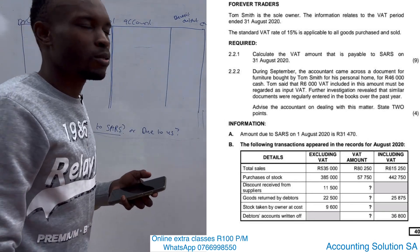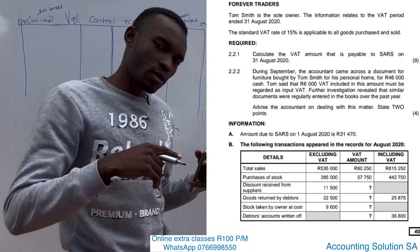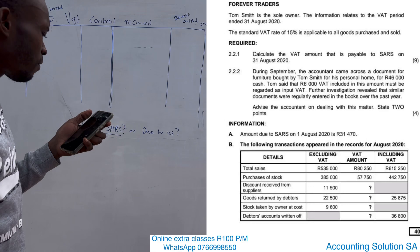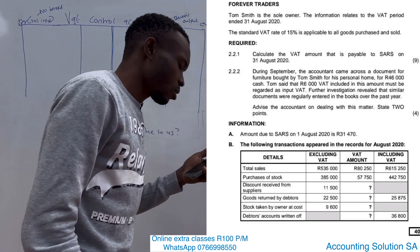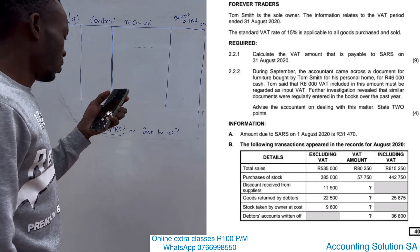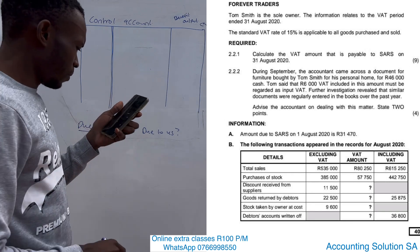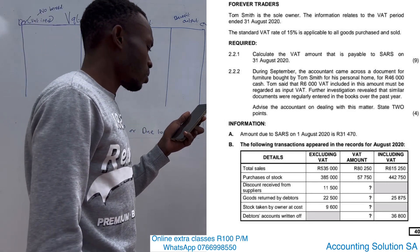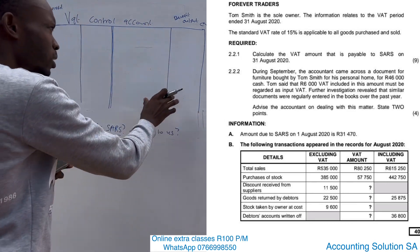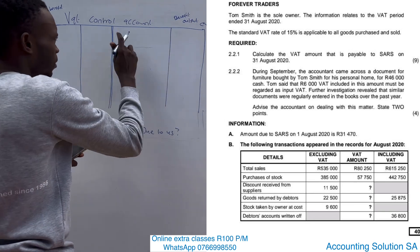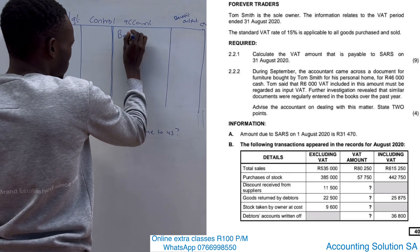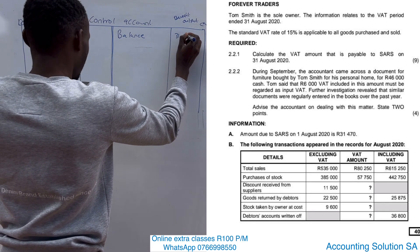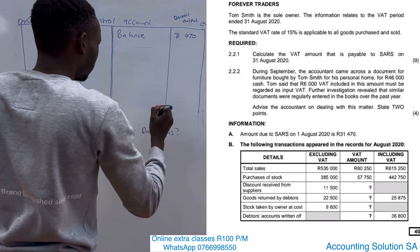In other words, when you record on the credit side, it simply means that we are owing SARS because we received a benefit. The question says: calculate the VAT amount that is payable to SARS. Number one, information A: the amount due to SARS on 1 August 2020 is 31,470. We owe SARS because we benefited, which means the opening balance of 31,470 goes on the credit side.